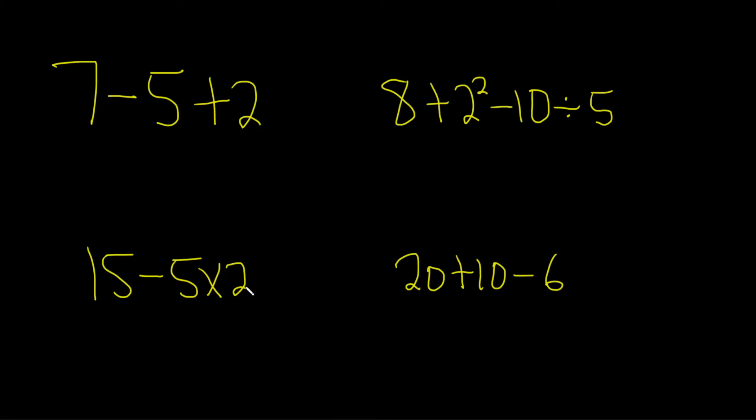In this problem, we're going to talk about simplifying number expressions. The rules are as follows: when simplifying number expressions, you first do all your multiplication and division, working from left to right. Then you do your addition and subtraction, working from left to right.